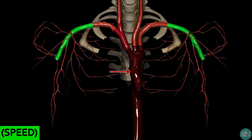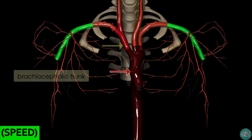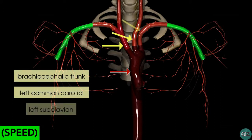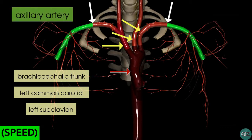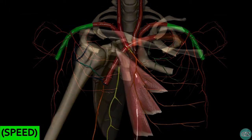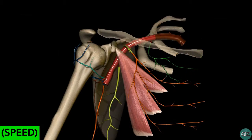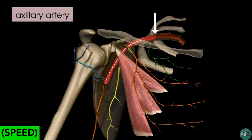What we're looking at here is the arch of the aorta with its three branches. We've got the brachiocephalic trunk, the left common carotid and the left subclavian artery. As the subclavian arteries on either side cross the lateral edge of the first rib to enter the axilla, it becomes known as the axillary artery, which you can see here highlighted in green. We're now looking at an isolated view of the axillary artery and its branches. You can see the subclavian artery crossing the lateral border of the first rib to become the axillary artery.